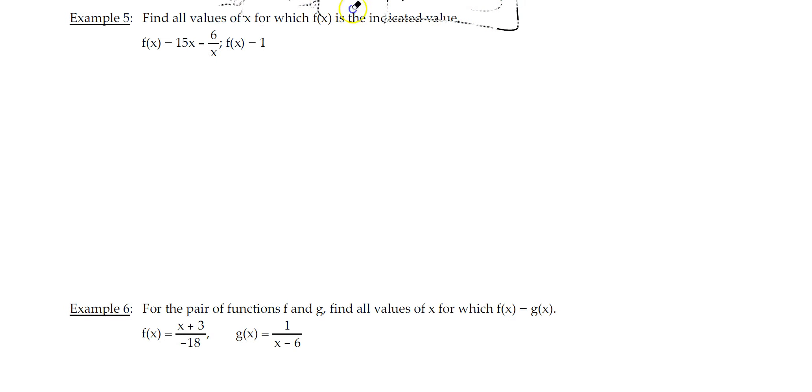Example 5. Find all values of x for which f of x is the indicated value. So we have f of x equals 1. On this problem, we have f of x is 15x minus 6 over x. So we replace f of x with 15x minus 6 over x, and that equals 1.